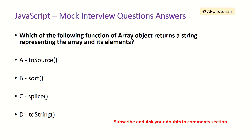Which of the following functions of the array object returns a string representing the array and its elements? The answer is toString — when you use toString, it will return a string representing the array and all its elements.